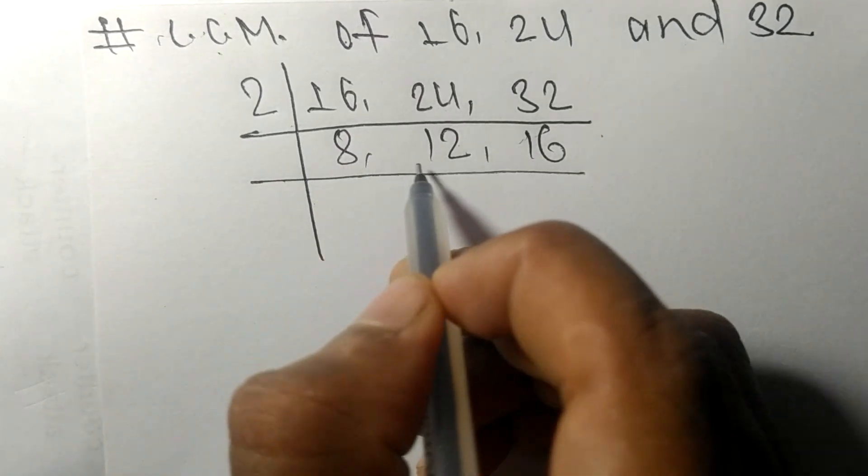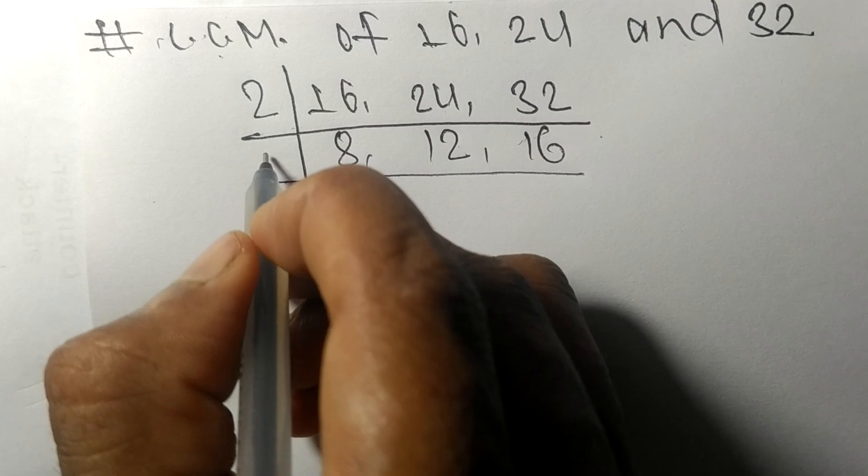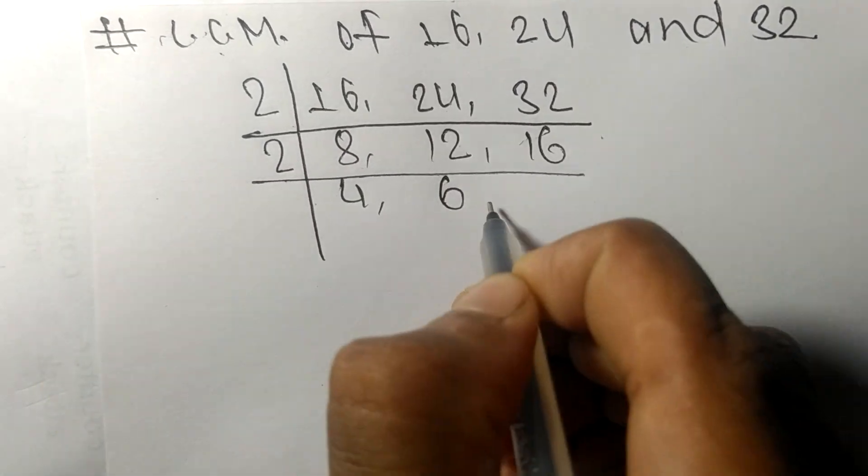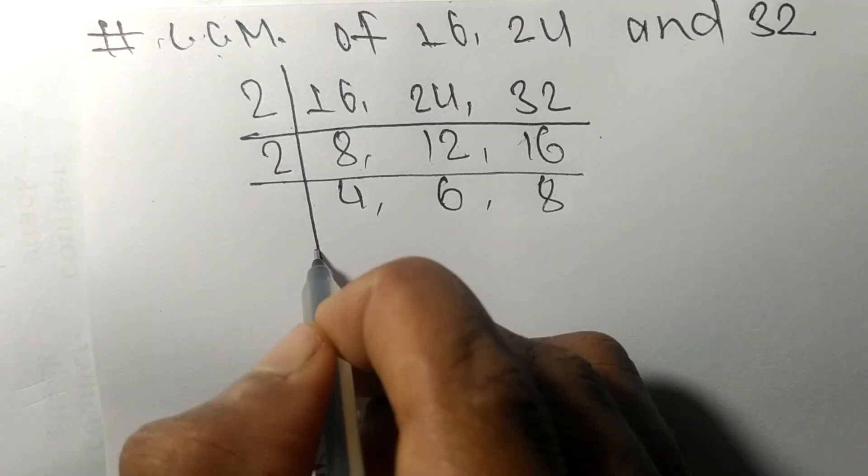Now again, these all numbers are divisible by 2. 2 times 4 is 8, 2 times 6 is 12, 2 times 8 is 16.